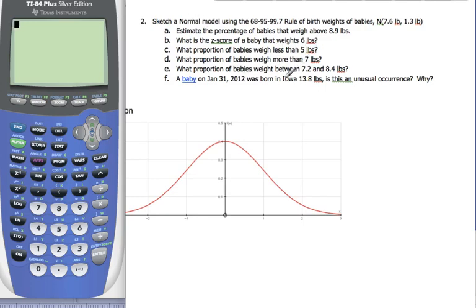Okay, today we're going to talk about the normal distribution. I'm going to do an example here. And we have babies that weigh N(7.6 pounds, 1.3 pounds). This here means it's a normal distribution. That's what the N means. This is my mean, mu, and my standard deviation, sigma.